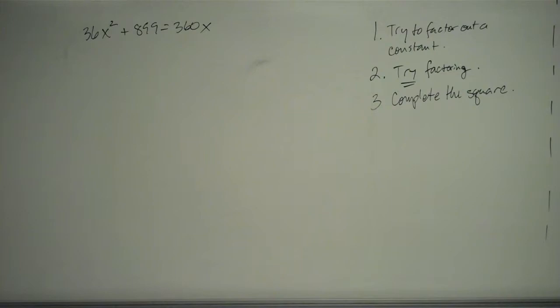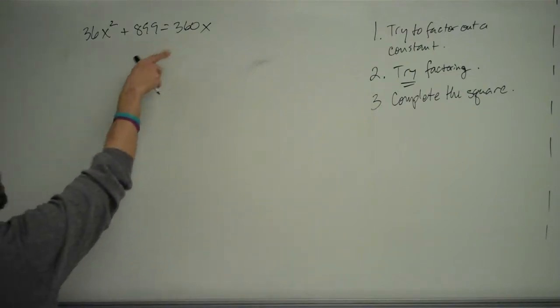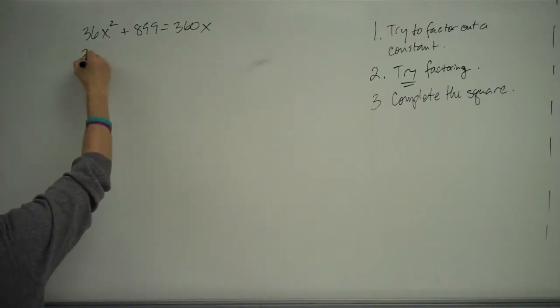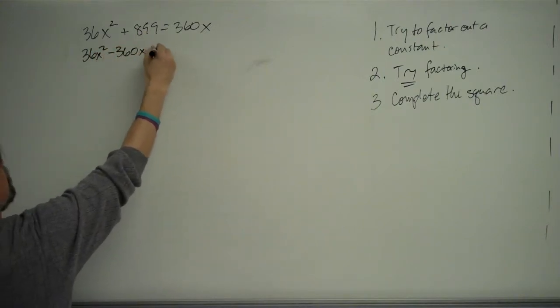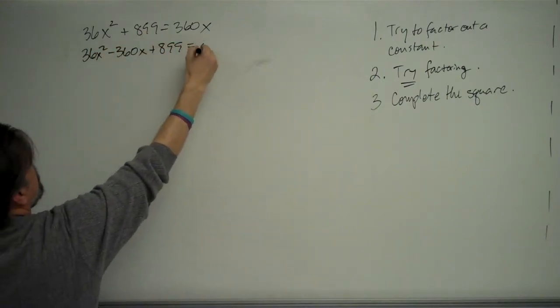So the next thing to do is subtract 360x from both sides, and we'll get 36x squared minus 360x plus 899 equals 0.